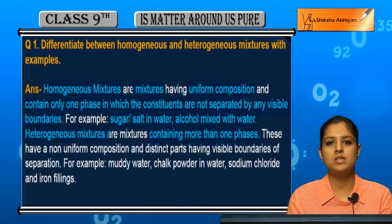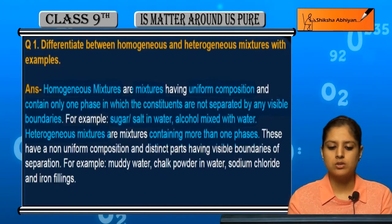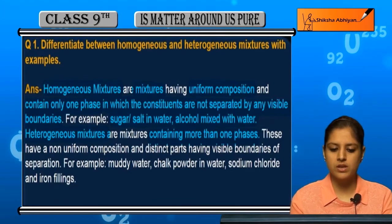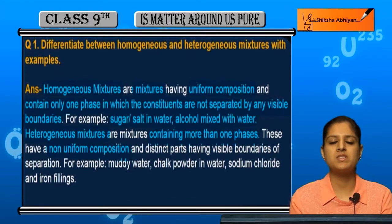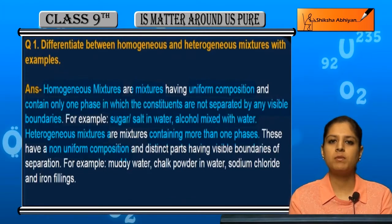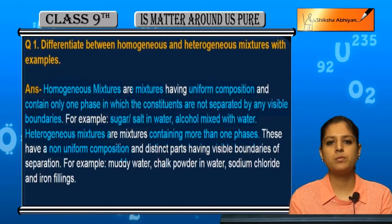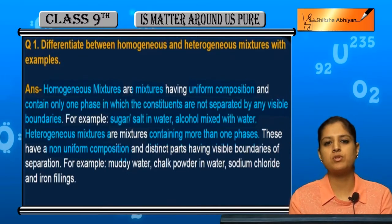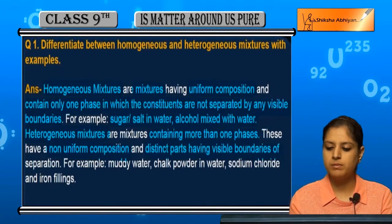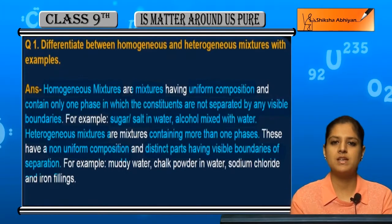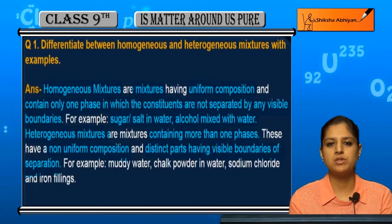So heterogeneous mixtures have more than one phase and no uniform composition. Their particles remain suspended and can move around, so the proportion of each constituent appears different at different locations. There are distinct parts with visible boundaries of separation — you can easily see which constituents are present.